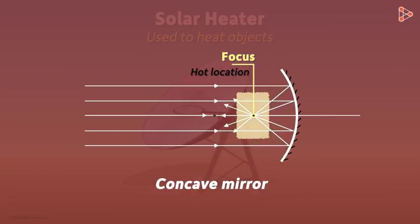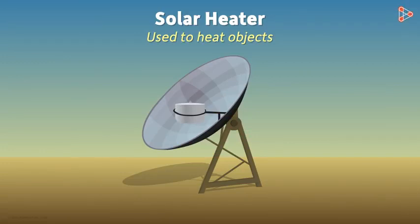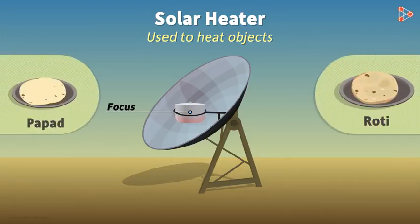If we bring a piece of paper at this point, it will quickly catch fire. We can use this property of concave mirrors to cook food or heat up liquids. All we need to do is place the container on a stand which is present at or near the focus. It will heat up after some time — you can even make a roti or a papad on this.